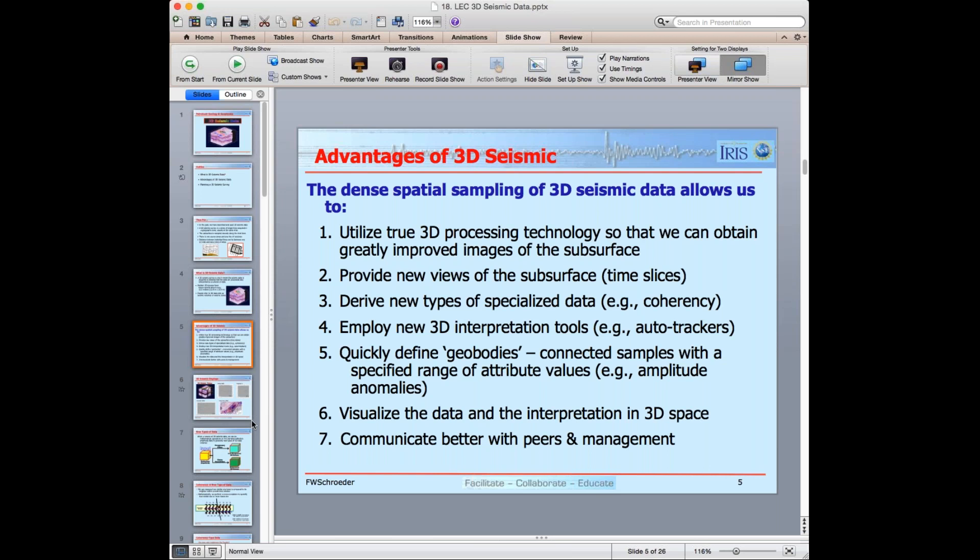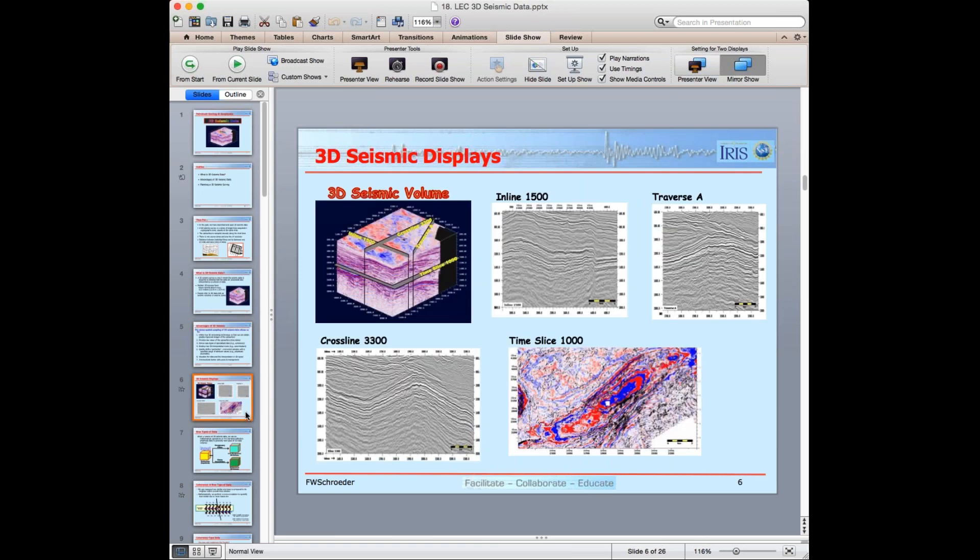And then I can visualize the data and the interpretation in 3D space. So that's bullet point number six. And number seven, communicate better with peers, our cohorts, our people at our same level, and also with management, people that are above us in the chain.